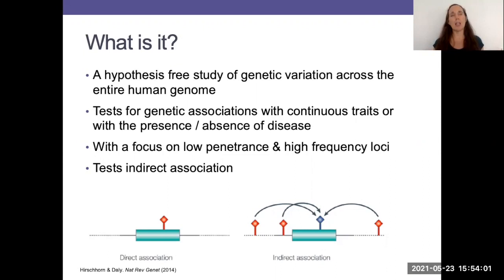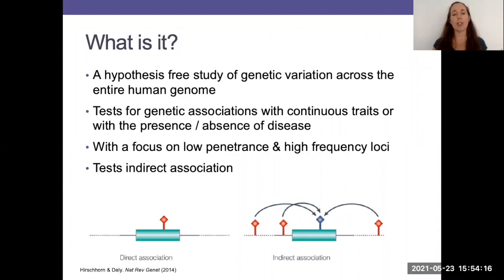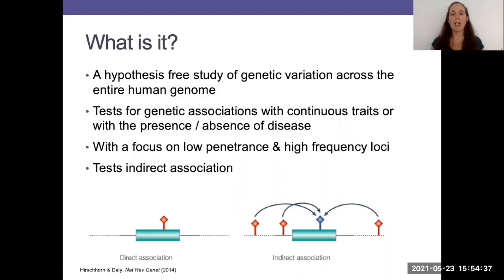One of the very important things to keep in mind with GWAS is that these are tests of indirect association. That's been depicted in a cartoon taken from a 2014 paper. These little red marks are SNPs that we have genotyped or imputed — so these are what we have measured. On the left hand side, it is indicating that this genetic variant that has been measured is doing the work: it is changing the form or function of a protein, changing gene expression, changing things that regulate genes.